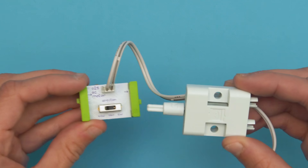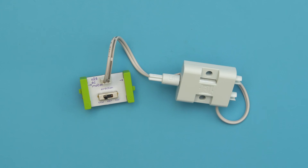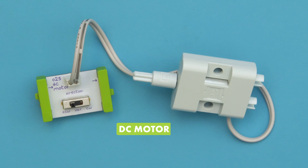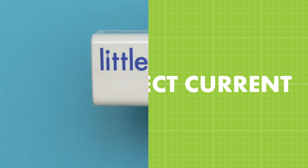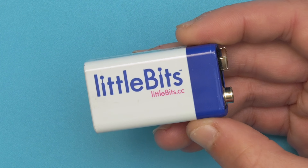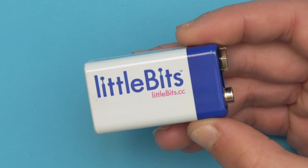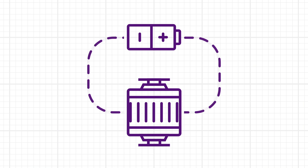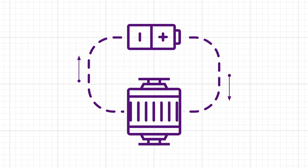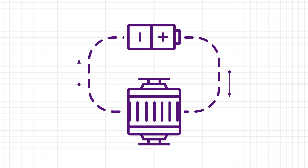This bit is a little version of the motor that's inside a lot of cars. It's called a DC motor. DC stands for direct current, which is the type of power the motor runs on. Batteries, like this one, supply direct current. That means when they power a circuit, electrical current constantly flows in one direction.